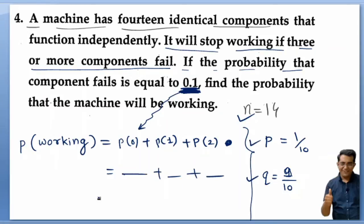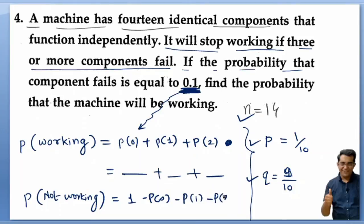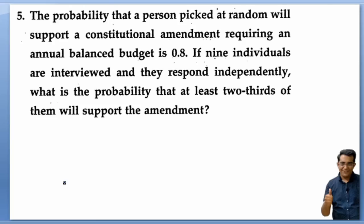Find P(X=0) + P(X=1) + P(X=2) and sum them for the probability the machine works. Alternatively, if they ask for probability the machine is not working, you would compute 1 − P(X=0) − P(X=1) − P(X=2), which gives the probability of 3 or more failures. Find N, P, and Q, apply the formula, and you will get the answer.